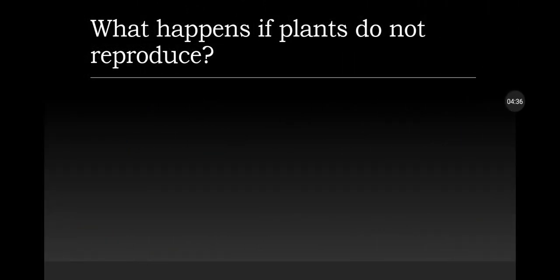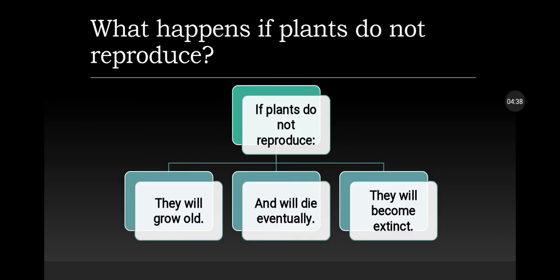What happens if plants do not reproduce? First, they will grow old. They will die eventually, and then they will become extinct.